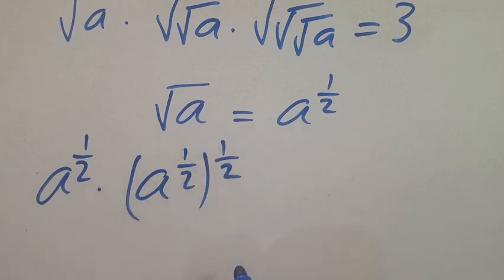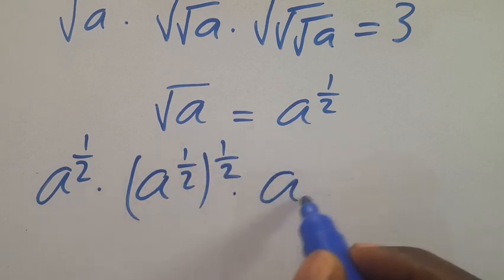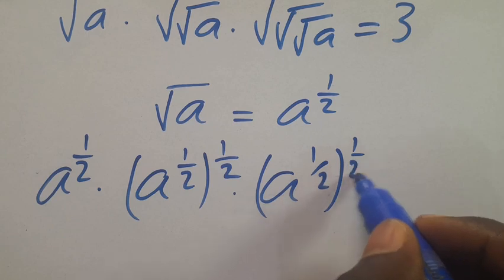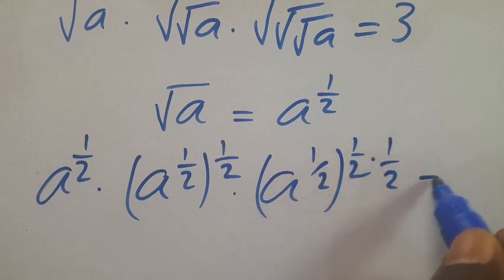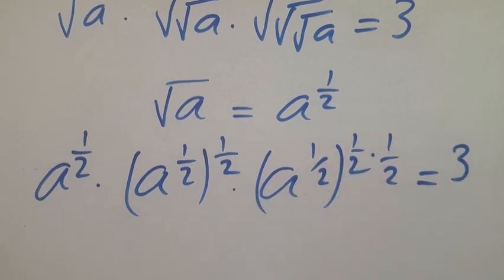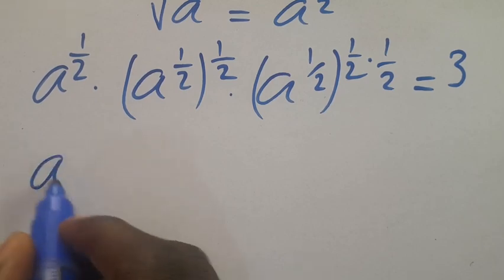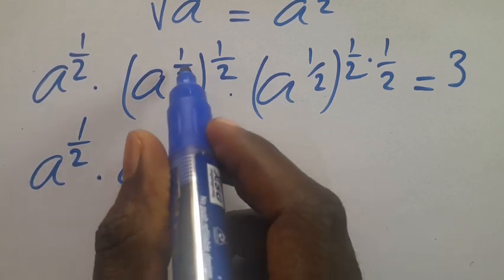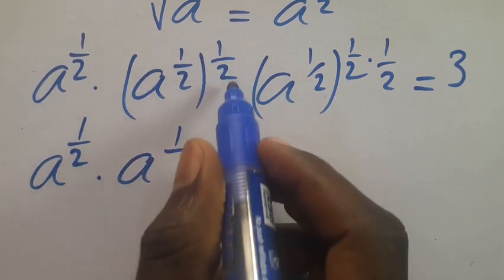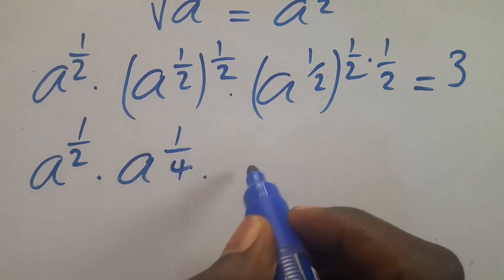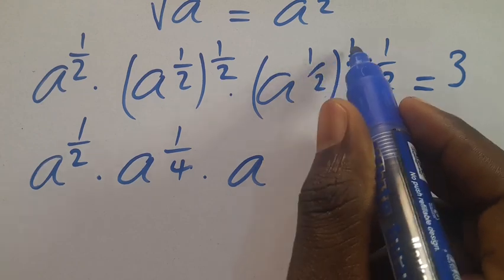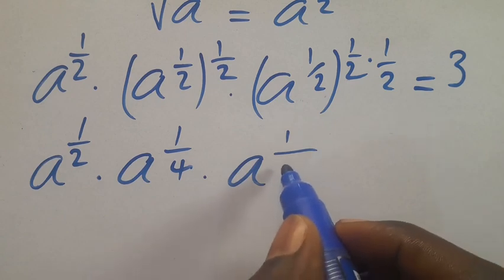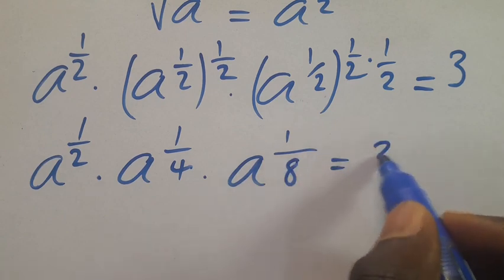We express each term using fractional exponents: a to the power of 1/2, multiplied by a to the power of 1/2 to the power of 1/2, multiplied by a to the power of 1/2 to the power of 1/2 to the power of 1/2, equals 3. This gives us a to the power of 1/2, multiplied by a to the power of 1/4, multiplied by a to the power of 1/8, equals 3.